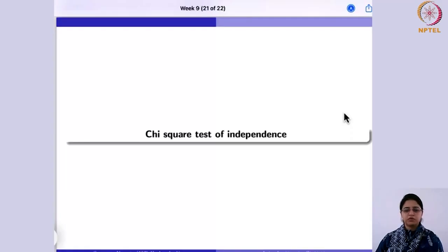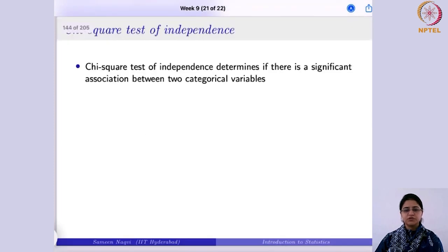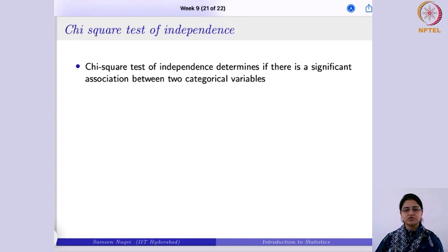Now we are going to learn about the chi-square test of independence. Chi-square test is primarily used to determine if there is a significant association between two categorical variables. If you have two categorical variables, the chi-square test of independence helps you determine whether the two variables are associated or not — whether they are independent or dependent.